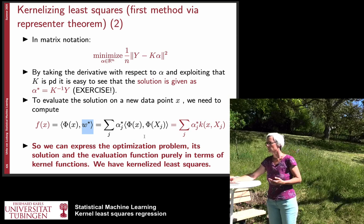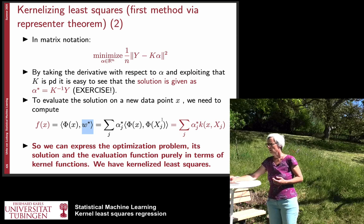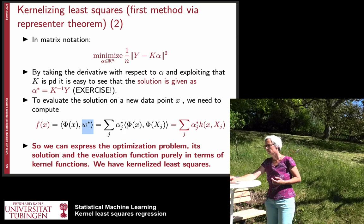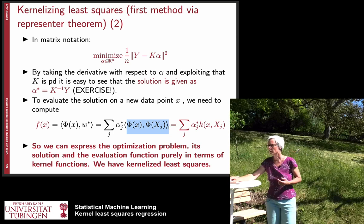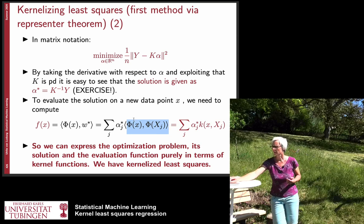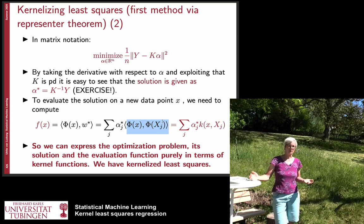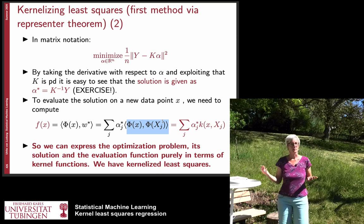You can put in the expression for W, take it out of the scalar product and again here we are left with the scalar product now between our test point and original training points and this can be again replaced by the kernel function.